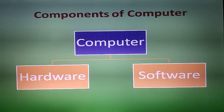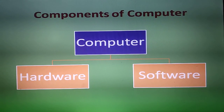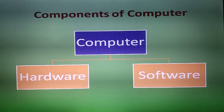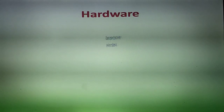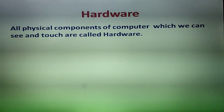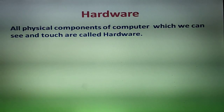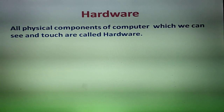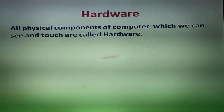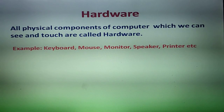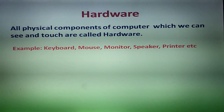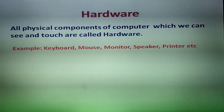What are the components of computer? There are two major components: first, hardware, and second, software. Hardware — all physical components of the computer which we can see and touch are called hardware. This includes all parts and all devices of the computer. Examples include keyboard, mouse, monitor, speaker, printer, DVD, plotter, and so on.